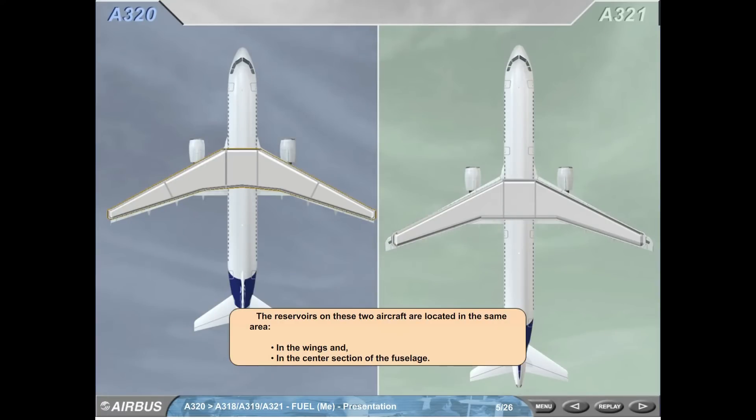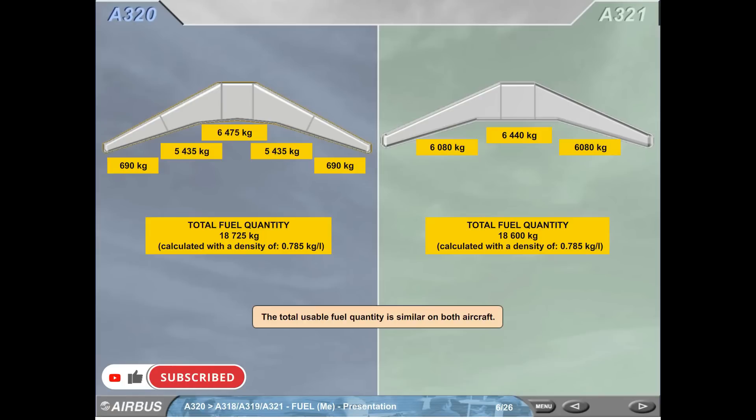The reservoirs on these two aircraft are located in the same areas: in the wings and in the center section of the fuselage. The total usable fuel quantity is similar on both aircraft.